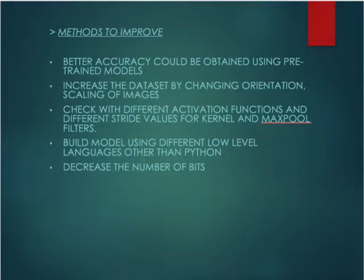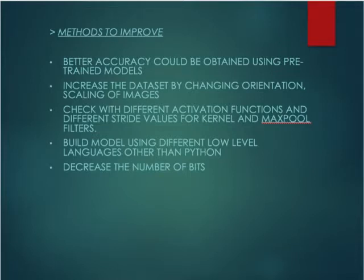Now let us look at the methods to improve the model. Since we couldn't achieve a better result with a custom CNN model, we have other options. One option is to use pre-trained models such as VGGNet, GoogleNet, or ResNet, which can be used to train our data for better performance. The second approach is, since we didn't have enough data, we could augment it by changing the orientation of the images through scaling. By also checking different activation functions and different stride values for kernel and max-pooling filters, we could achieve better performance.